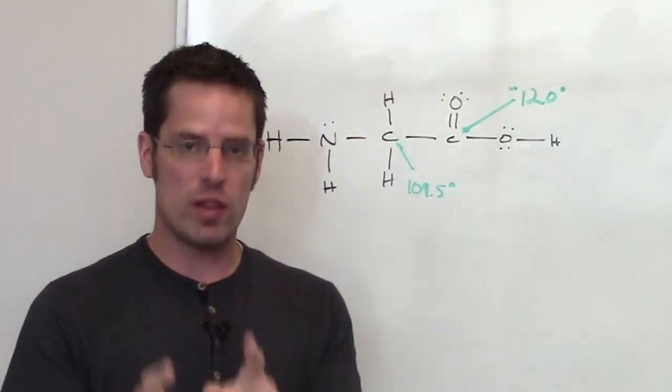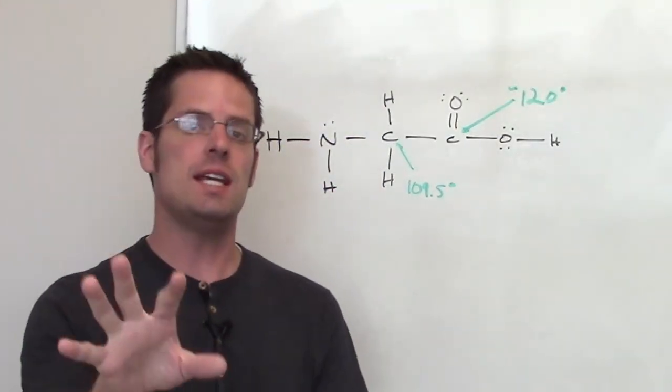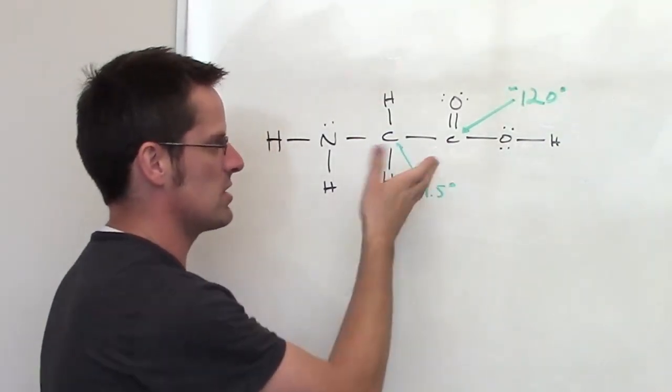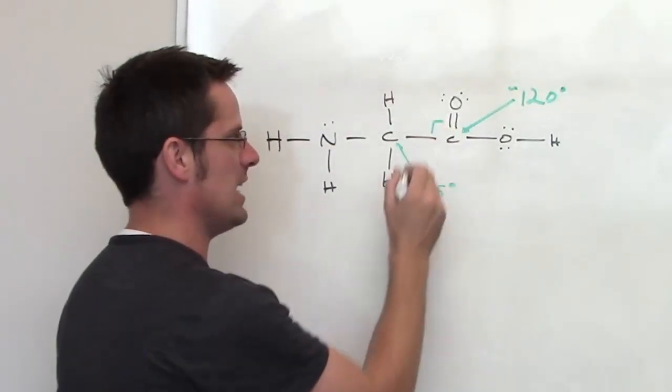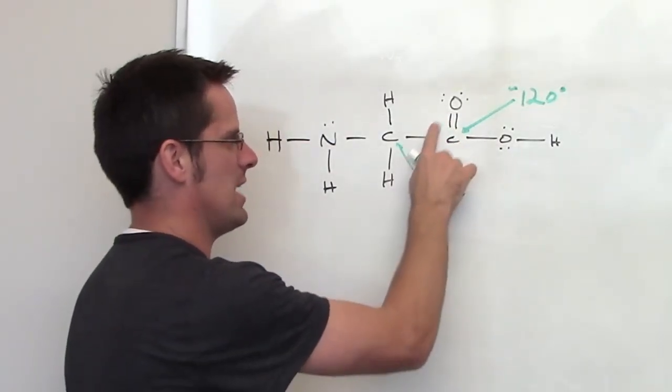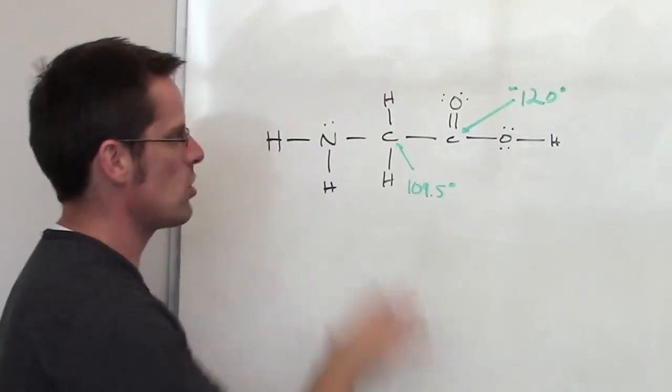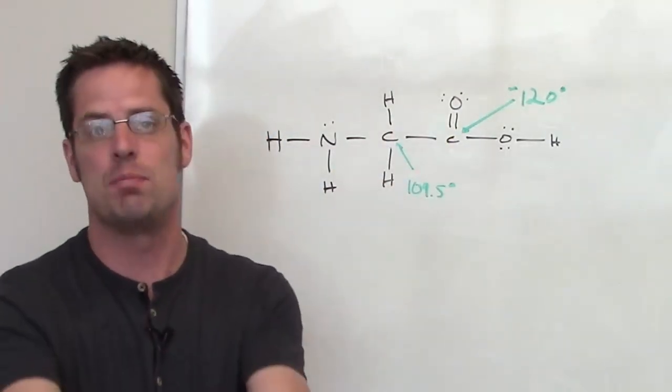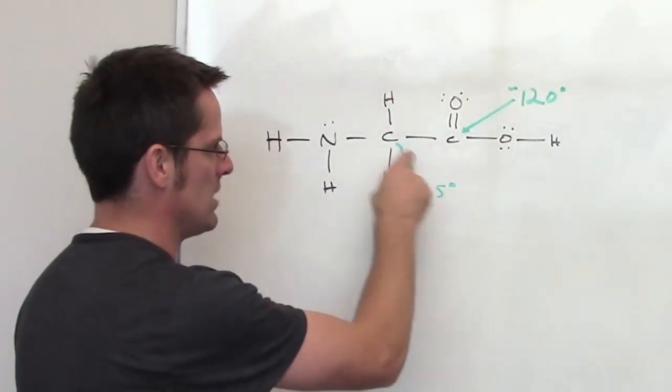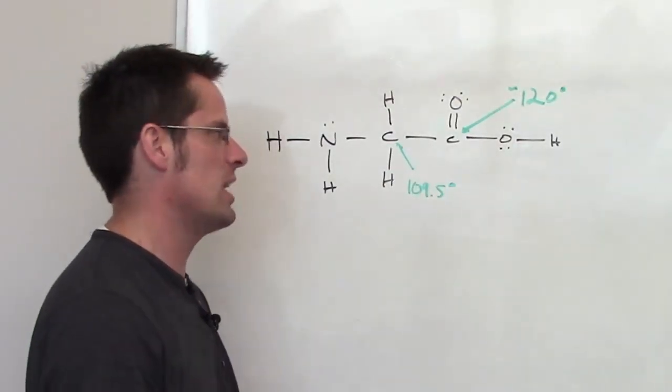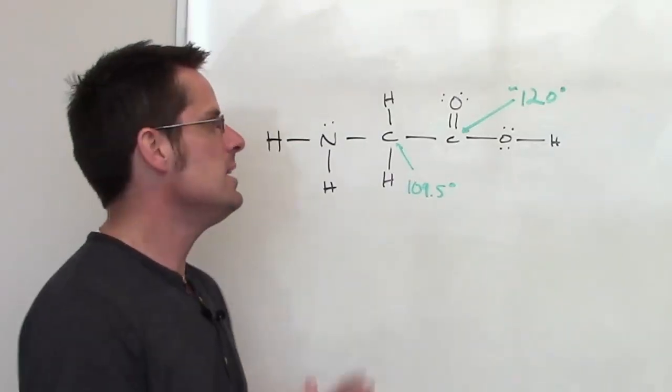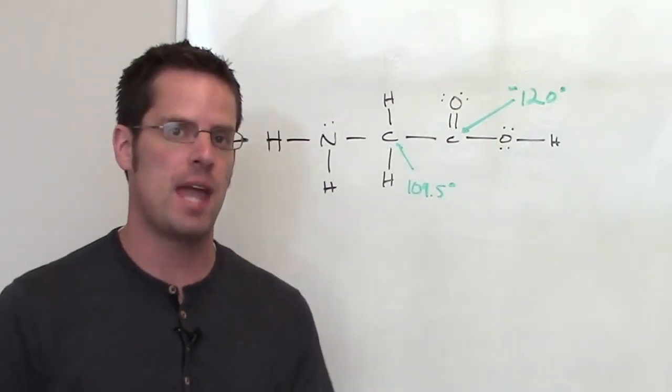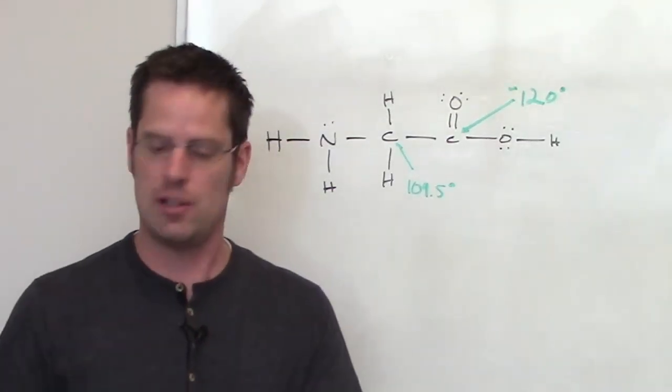Now for the love of all that is holy students, please do not think that this is 180 degrees simply because it's drawn that way. Don't think that this is 90 degrees just because it's drawn that way. That is not true. We draw it this way for the sake of clarity, for the sake of making it simple. But the actual bond angles around each of these atoms is not necessarily 90 or 180. It corresponds completely to how many different things there are around each of those atoms as we've talked about in earlier lecture on molecular geometry.